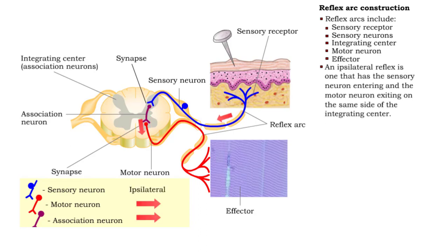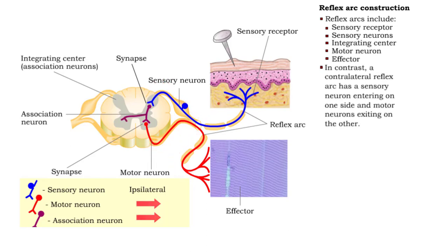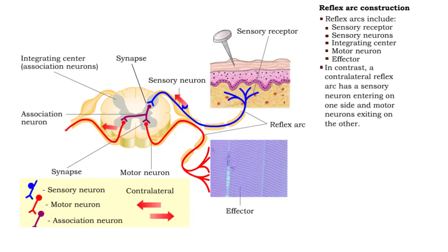An ipsilateral reflex is one that has the sensory neuron entering and the motor neuron exiting on the same side of the integrating center. On the other hand, when the sensory neuron enters the integrating center on one side and the motor neuron exits on the other side, the reflex arc is considered contralateral.